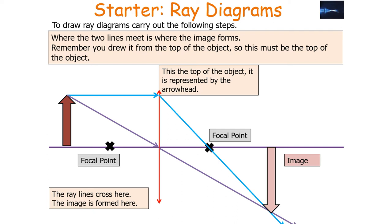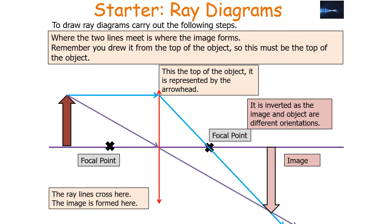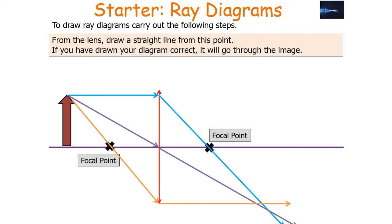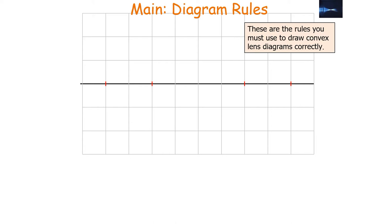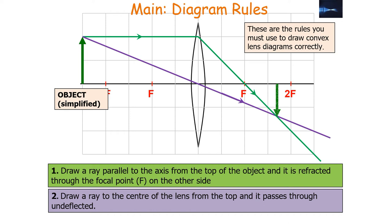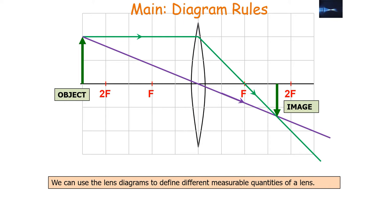From this ray diagram you can describe the image. In this example the image is real (the lines actually cross), inverted (opposite orientation to the object), and magnified (the image is larger than the object). To verify, you can draw a third ray from the top of the object through the focal point on the left-hand side of the lens — it should emerge parallel to the axis and intersect where the other two lines meet.